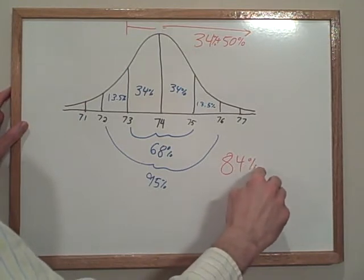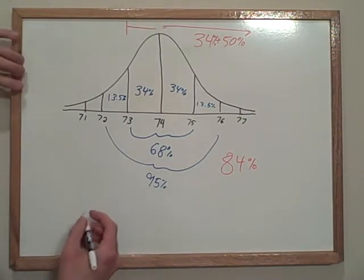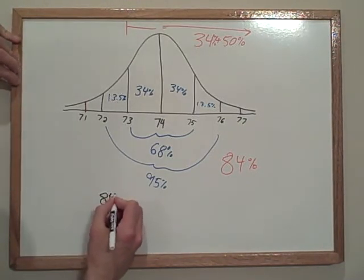Well, that doesn't answer the question but it's going to get us there. So 84% of the football team is 73 inches or taller. Well, let's kind of write that out in mathematical terms.